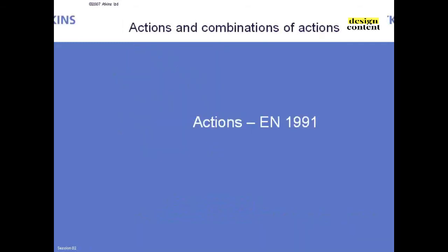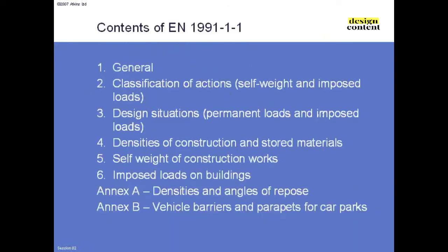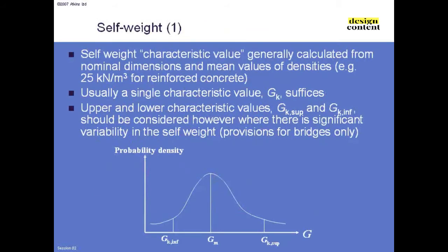Looking quickly through the actions themselves: Eurocode 1.1 deals with self-weights and loads for buildings. For self-weight, the characteristic value is generally taken as the nominal value — we go to the drawing, take the thickness, multiply by the average density given in Eurocode 1.1, and that nominal self-weight becomes the characteristic self-weight. We're designing to the mean value; variations in thickness and density are taken into account in the gamma factors.